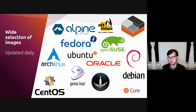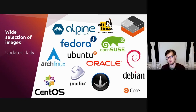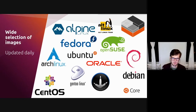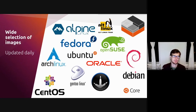We have Alpine, Alt Linux, OpenSUSE, Fedora, Ubuntu, Oracle Linux, Debian, Arch Linux, CentOS, Gentoo Linux, and Ubuntu Core. We're currently serving over half a million image downloads every month, and this number keeps going up, showing LXD is seeing more and more adoption.